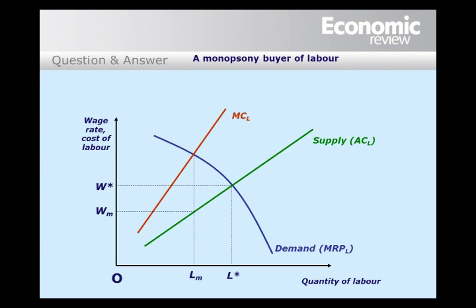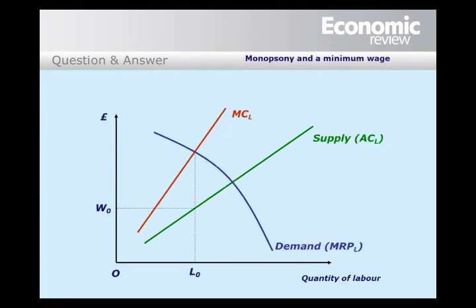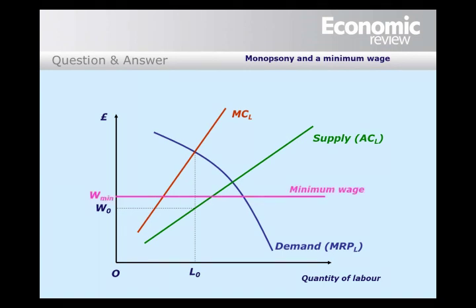The firm is using its monopsony power to increase its profits. So suppose we have a monopsony firm maximizing profits with wage set at W_zero and employment L_zero. Suppose the government imposes a minimum wage — let's say at W_min, which is above W_zero. The MCL curve is no longer the marginal cost of labor to the firm, which cannot pay less than W_min. So the firm now maximizes profits at L_min, and employment has increased as a result of the introduction of the minimum wage.